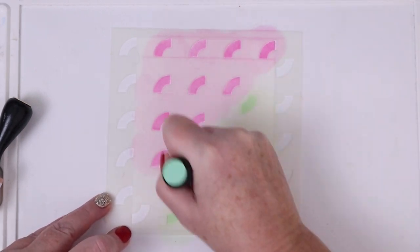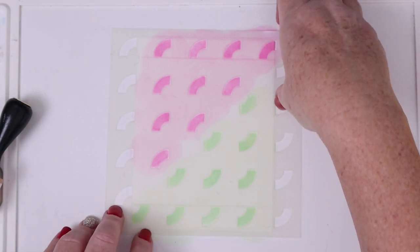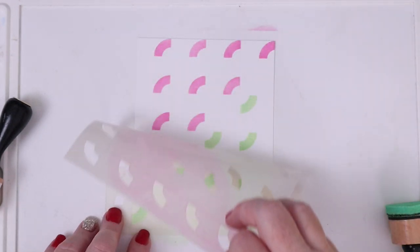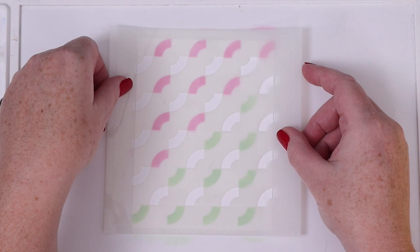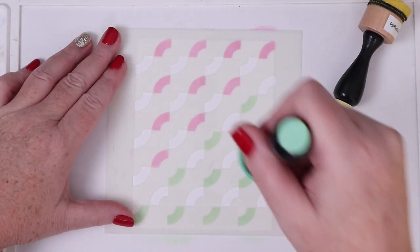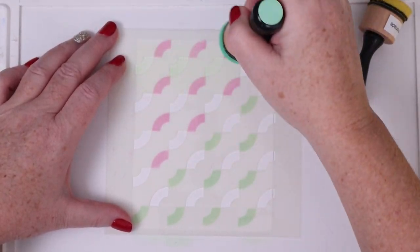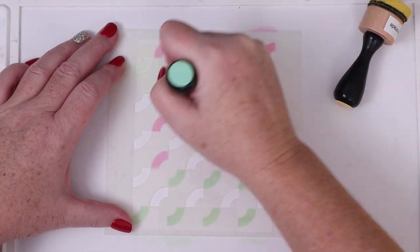Then I peeled off the stencil to see where we were in terms of creating our rainbow rings. Next I placed stencil number two on top - you can see I'm lining up the tips of the openings with the corners of the already inked arcs.